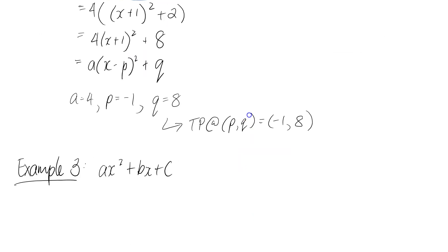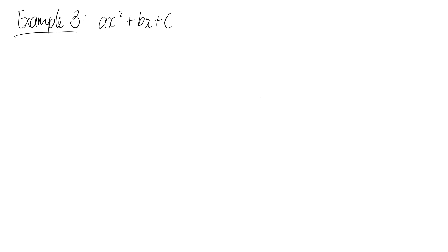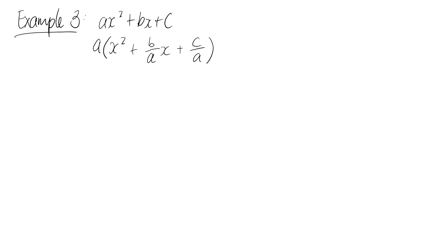The last thing I want to go through is the general form — converting from ax squared plus bx plus c. Following exactly the same process, we start by factorizing out the a to get an x squared on its own. So we get a times x squared plus b over a times x plus c over a. The a's cancel when you expand back out, taking you to just bx and c respectively.